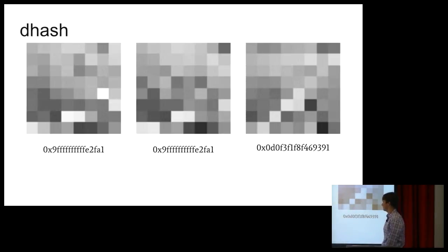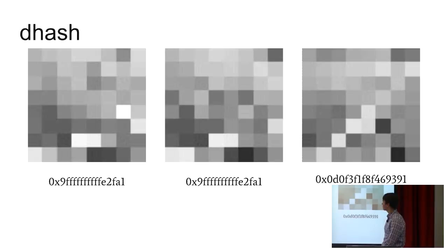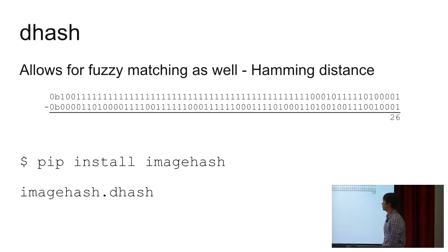Hamming distance is the number of different bits between two strings. There's a library on the Python package index that makes it fairly easy to use these as well. You feed it an image and it spits out a number.